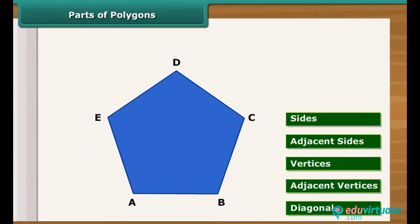The line segments AB, BC, CD, DE and EA form the polygon ABCDE. These are the sides of polygon. Any two sides with common end points are called adjacent sides.